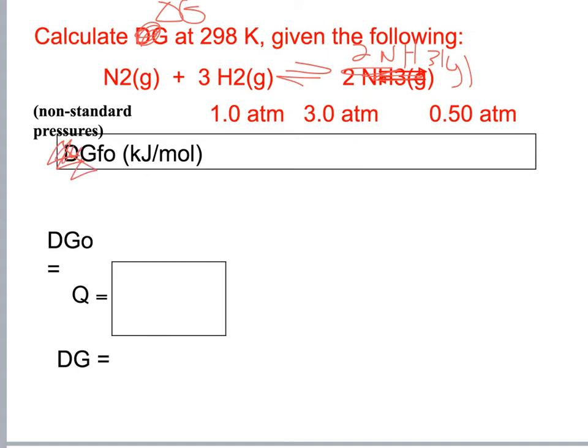At standard state, delta G of formation of NH3 is negative 17 kJ/mol, so delta G naught equals 2 times negative 17, giving negative 34 kilojoules, or negative 34,000 joules.